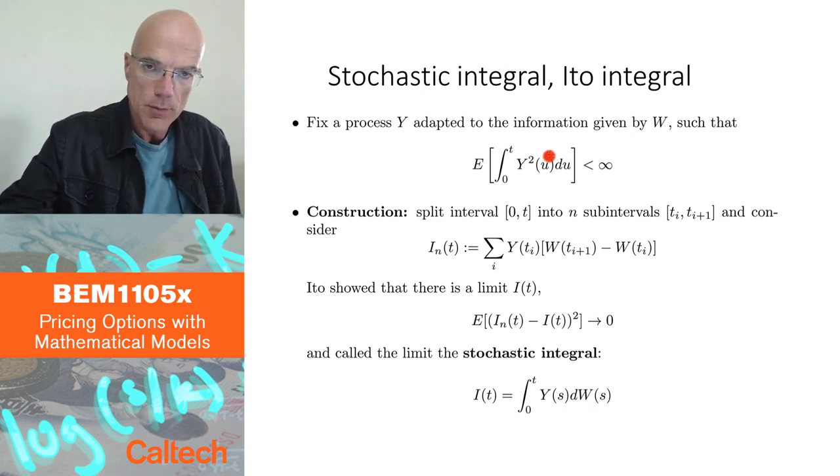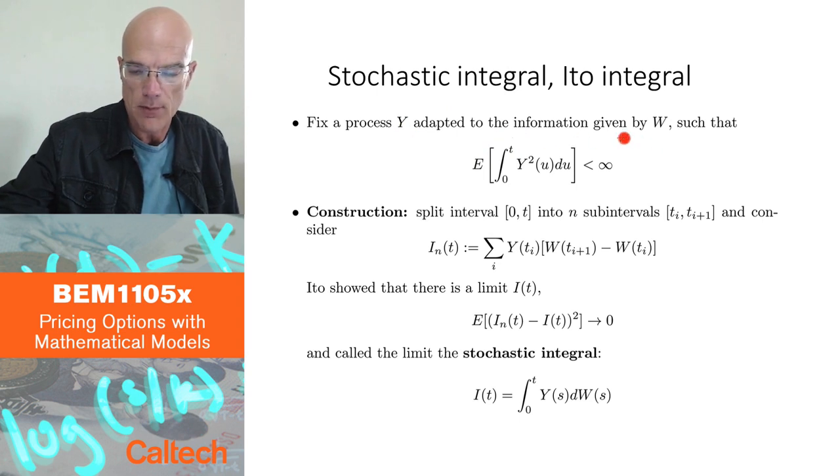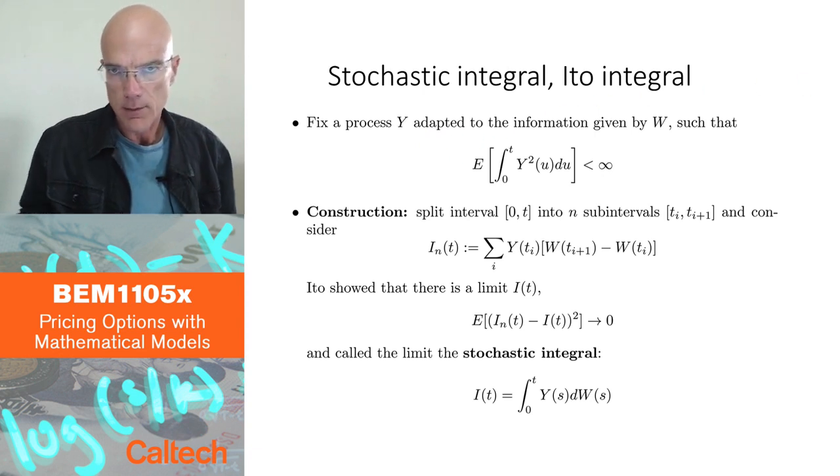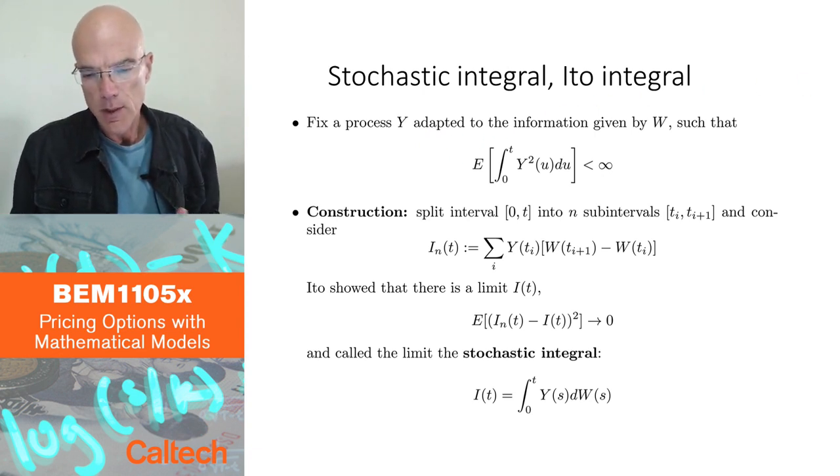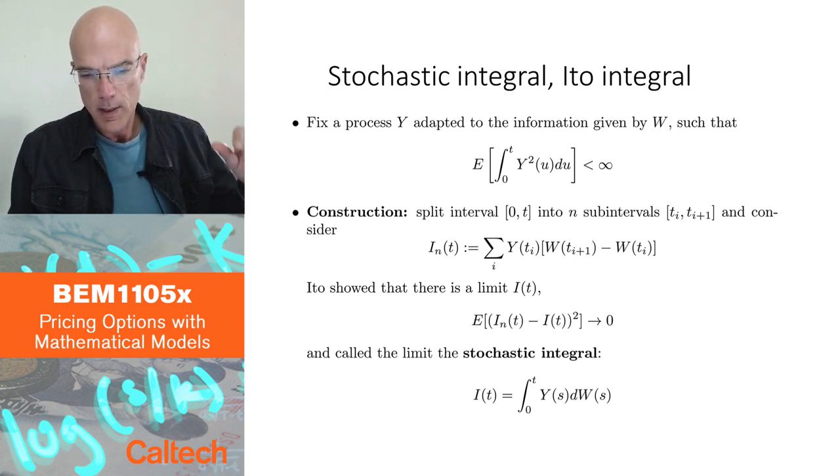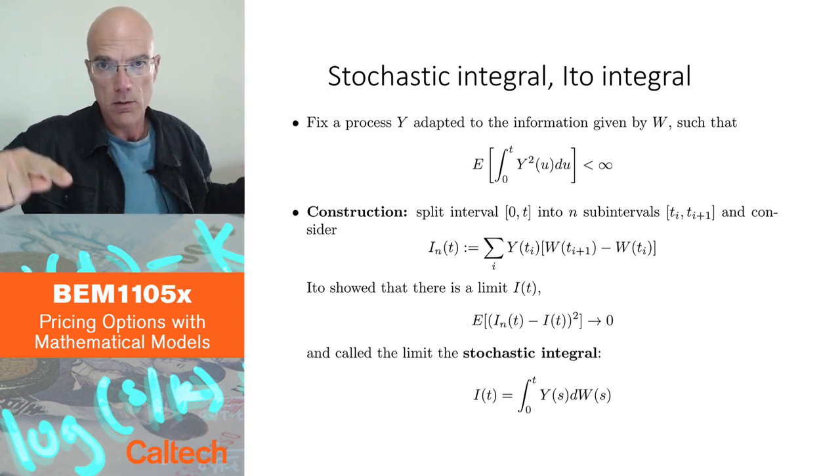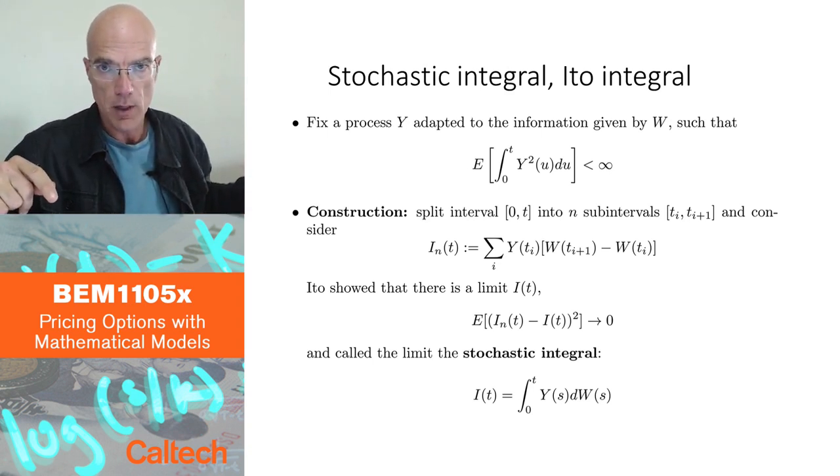We are going to put a couple of assumptions on Y. One assumption, it says adapted here. It says the process Y is adapted to the information given by W. There is a mathematical definition of this, but intuitively what it means, and that's enough for us here, adapted means it's a process which by time T, Y of T, only depends on the history of Brownian motion up to time T and not on the future values of Brownian motion.